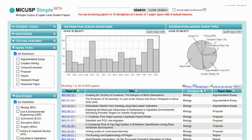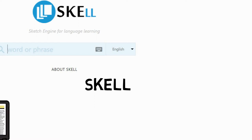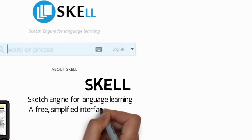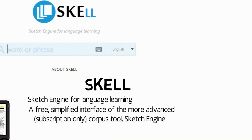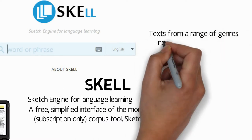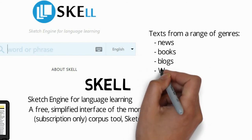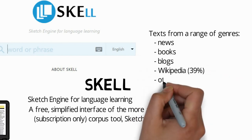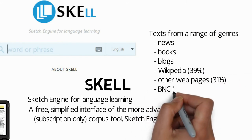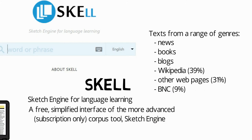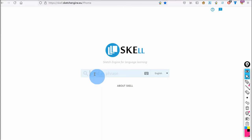Finally, let's look at the Skell concordancer. Skell is short for Sketch Engine for Language Learning — a free, simplified interface of the more advanced subscription-only corpus tool Sketch Engine. The Skell concordancer uses its own corpus from a range of genres: news, books, blogs, Wikipedia (which accounts for 39%), other web pages (31%), and the British National Corpus at 9%. Although this includes the academic corpus of the BNC, this is not an academic corpus. But it's still very useful for academic study. Skell is definitely the easiest of the concordancers to use.